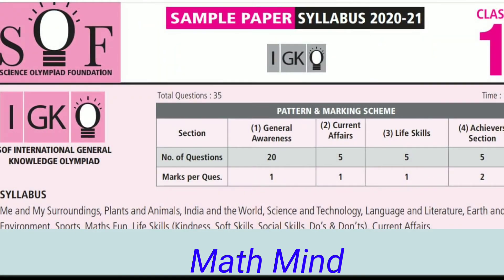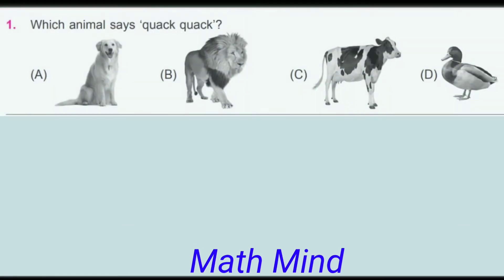I.G.K.O International General Knowledge Olympiad Class 1. This is the question pattern. Questions will come from these four sections: first, General Awareness; second, Current Affairs; third, Life Skills; fourth, Achievers Section.